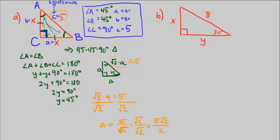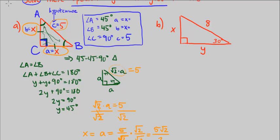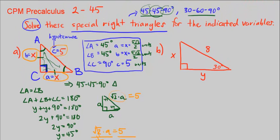So both legs equal 5√2/2, which means x = 5√2/2. Writing the final answers: side a = 5√2/2 units, side b = 5√2/2 units, side c = 5 units. That's how we solved Part A.